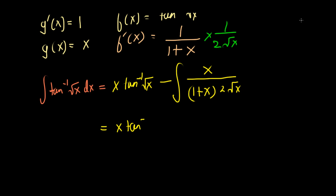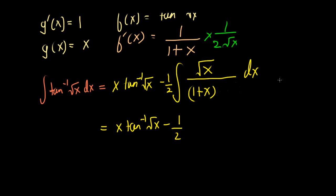Let's simplify. We can use properties of exponents: x divided by 2√x simplifies so the x's partially cancel, leaving √x. Also, we can pull the 2 out as a constant, so this becomes x·arctan(√x) minus one-half times the integral of √x over (1+x) dx.